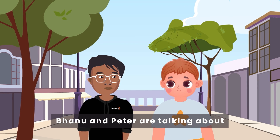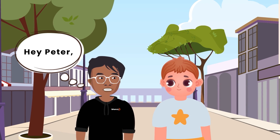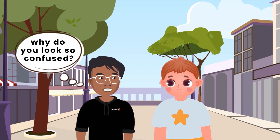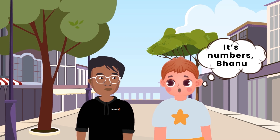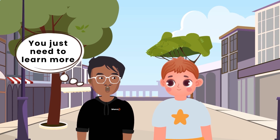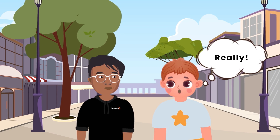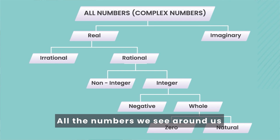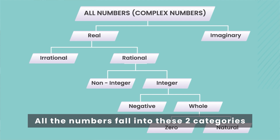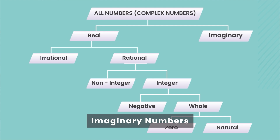What a coincidence! Banu and Peter are talking about the types of numbers around us. Hey Peter, why do you look so confused? It's numbers, Banu. Numbers confuse me. Oh, that's it. You just need to learn more about the number system and you won't be confused anymore. Really? Please tell me more. All the numbers we see around us can be categorized like this — all the numbers fall into these two categories: real numbers and imaginary numbers.